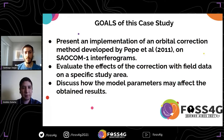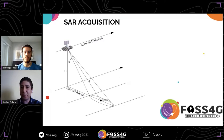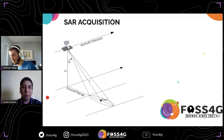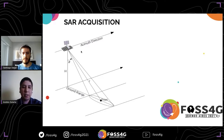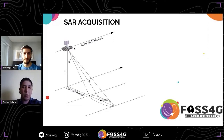I will leave the floor to Andres, who is going to give some theoretical and methodological introduction. We are going to talk about some issues that arise when working with SAR images for interferometric purposes. When we speak about azimuth, we refer to the direction of the satellite's trajectory, while range is the direction in which the satellite is looking at the Earth.